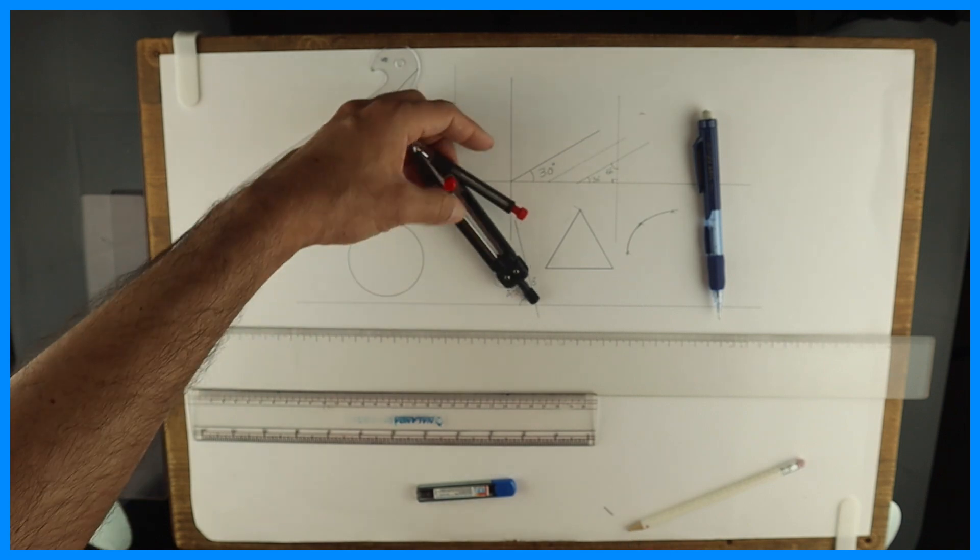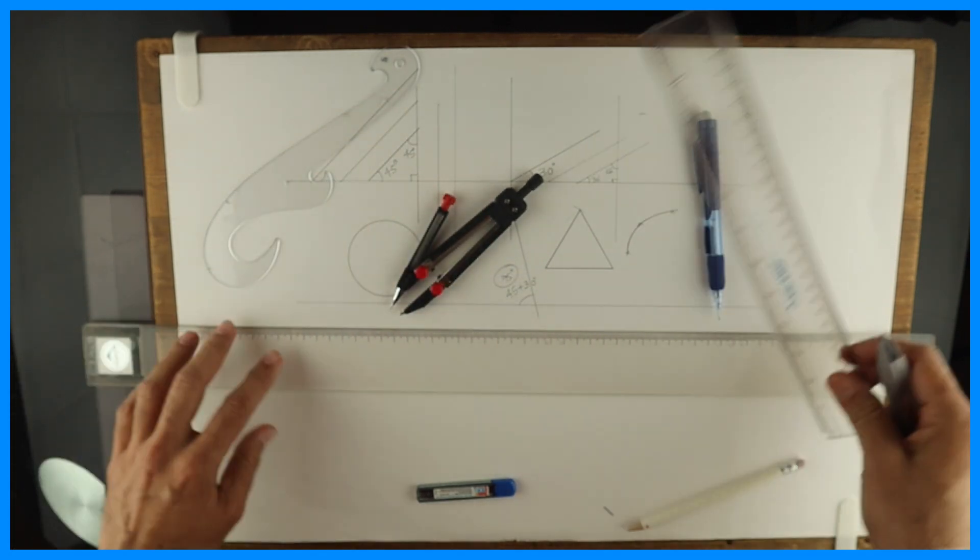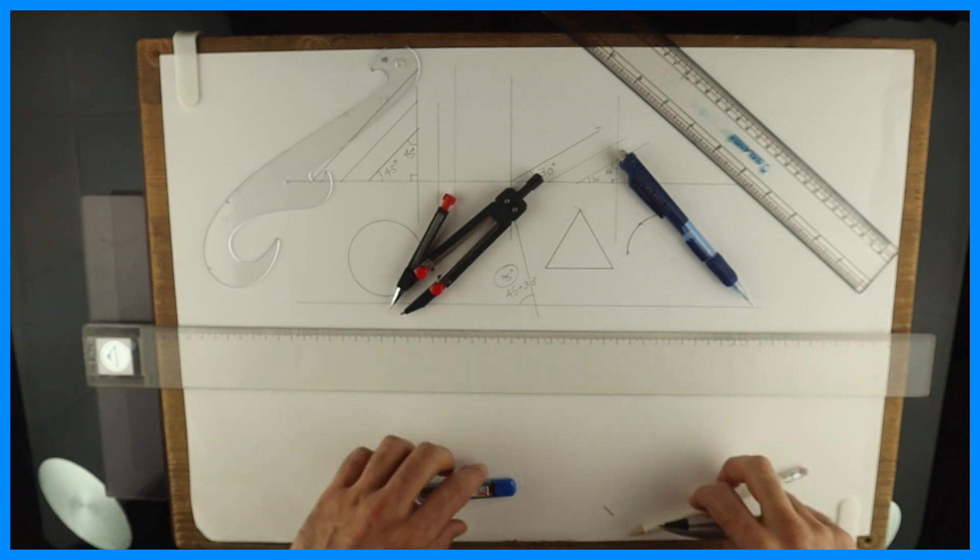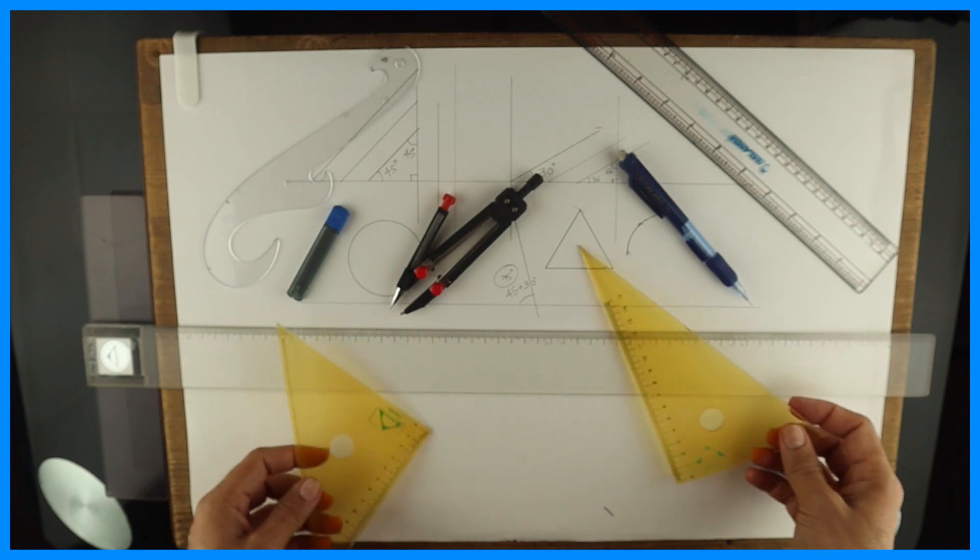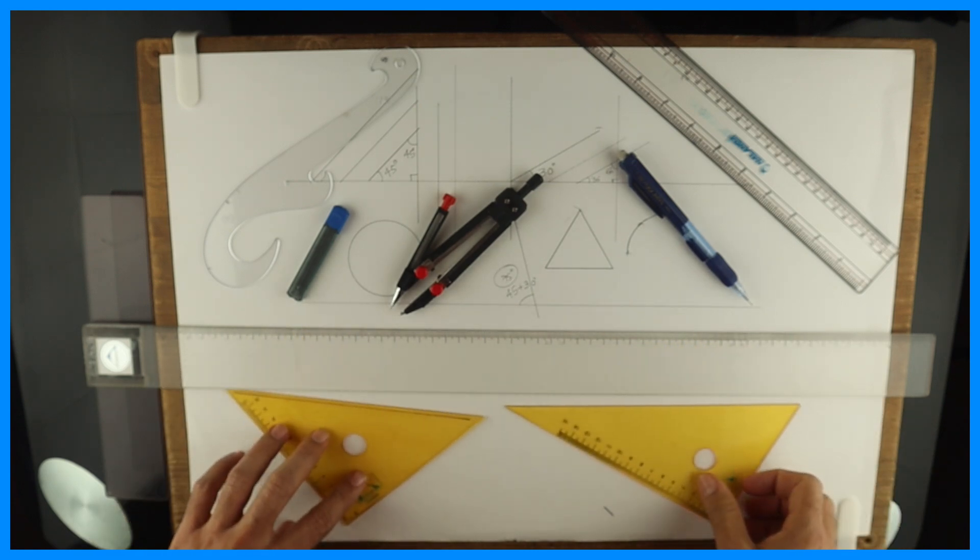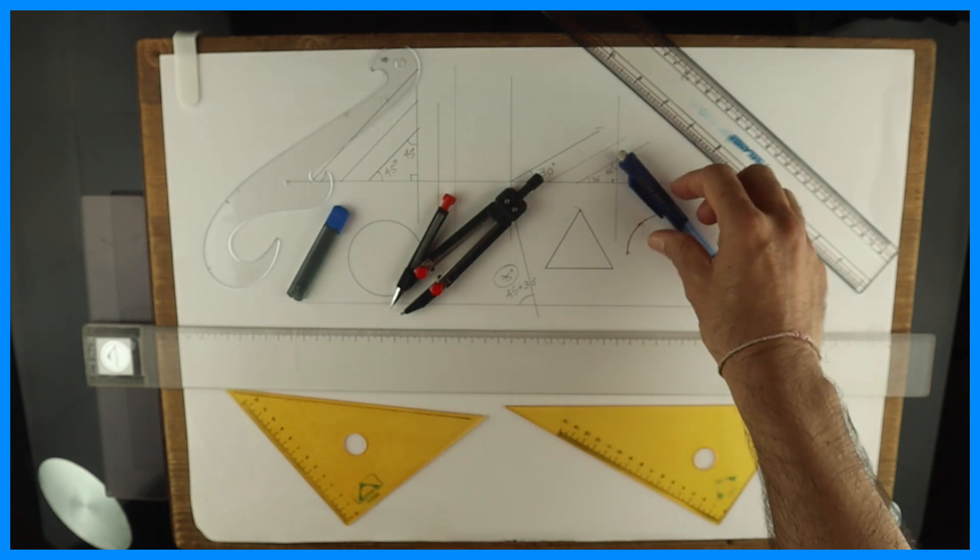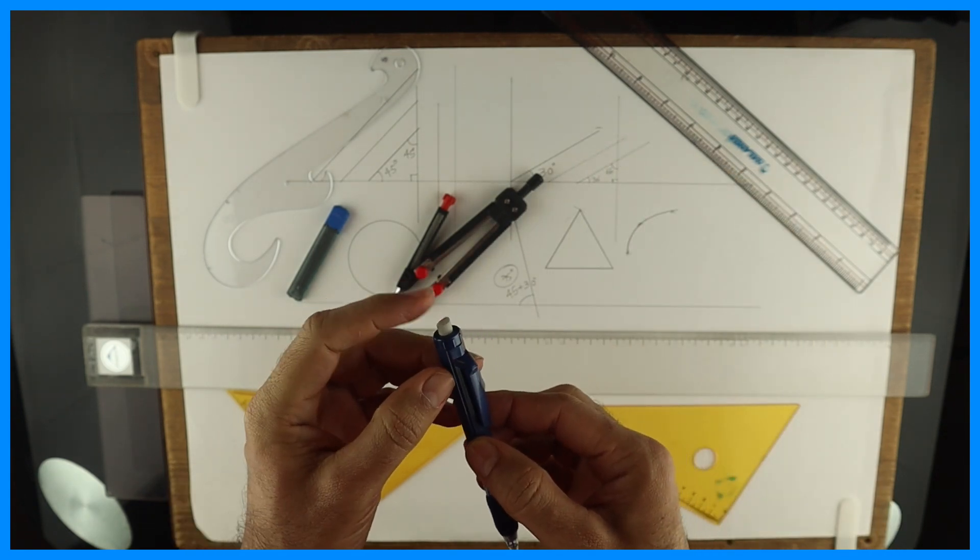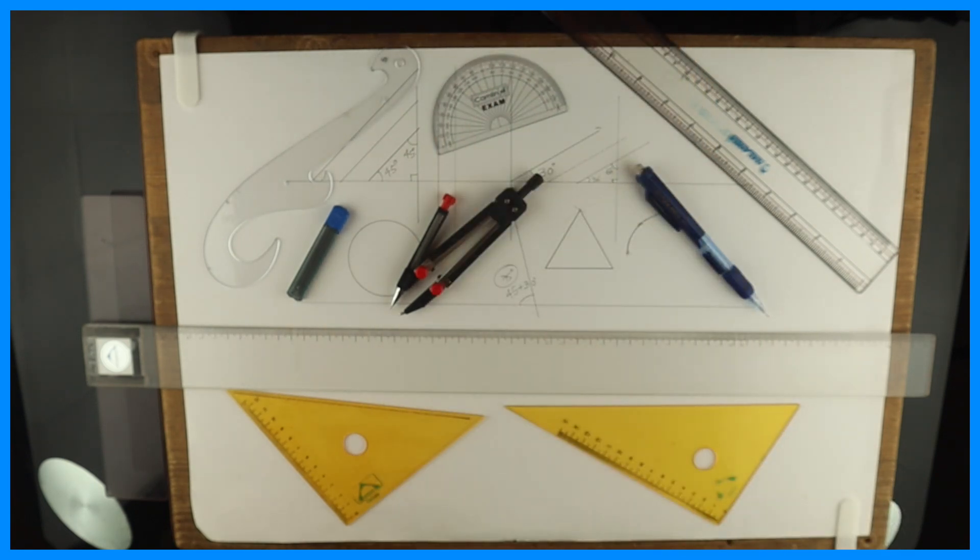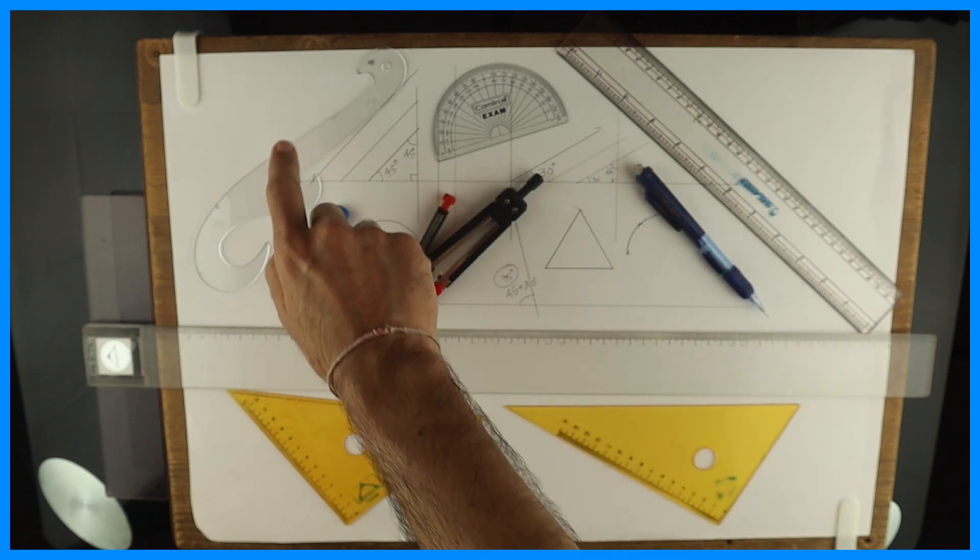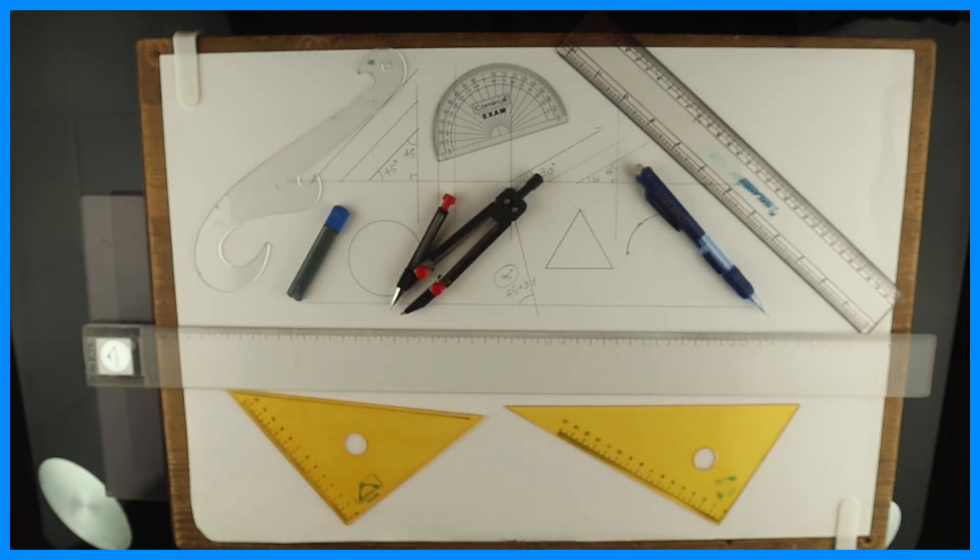So rounder big one, small one, scale, lead box, set square, clips already there, eraser. We can use this eraser or a normal non-dust eraser that will do. And one protractor. So this is what we require - minimum requirements for technical drawing instruments. I hope you people have understood it, how to use it. Thank you.